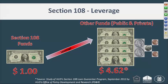Section 108 funds leverage approximately $4.62 for each dollar spent. Public funds include local and state funds, state and federal income tax credits, and other federal programs. Private funds include private local banking, investor equity, and developer's equity.